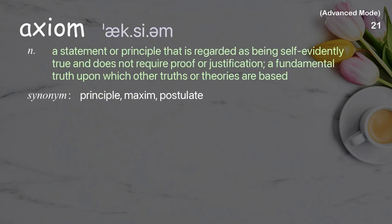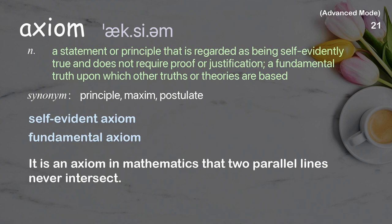Axiom: A statement or principle that is regarded as being self-evidently true and does not require proof or justification; a fundamental truth upon which other truths or theories are based. It is an axiom in mathematics that two parallel lines never intersect.